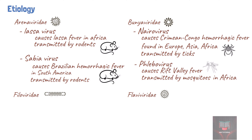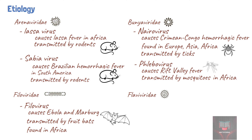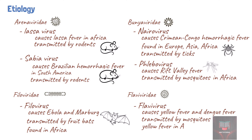The Filoviridae family includes the filovirus, which causes Ebola and Marburg, and are transmitted by the fruit bat in Africa. The Flaviviridae family includes the Flavivirus, which causes yellow fever and dengue hemorrhagic fever. Both are transmitted by mosquitoes. Yellow fever is found in tropical Africa and South America, while dengue hemorrhagic fever is found in Asia, the Americas, and Africa.